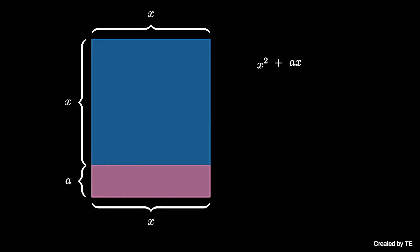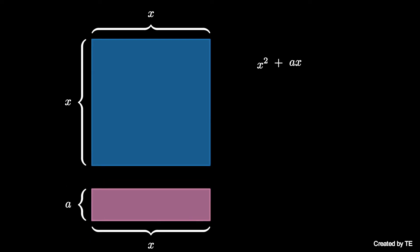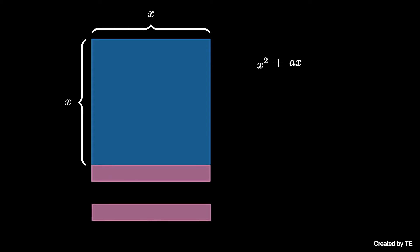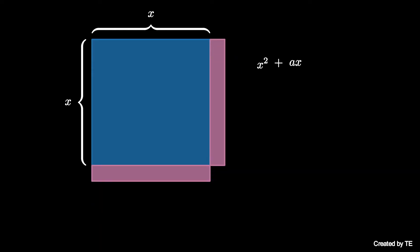Now separate the a by x rectangle, cut it in half along the side with length a, and attach the two resulting smaller rectangles to adjacent sides of the square, like this.